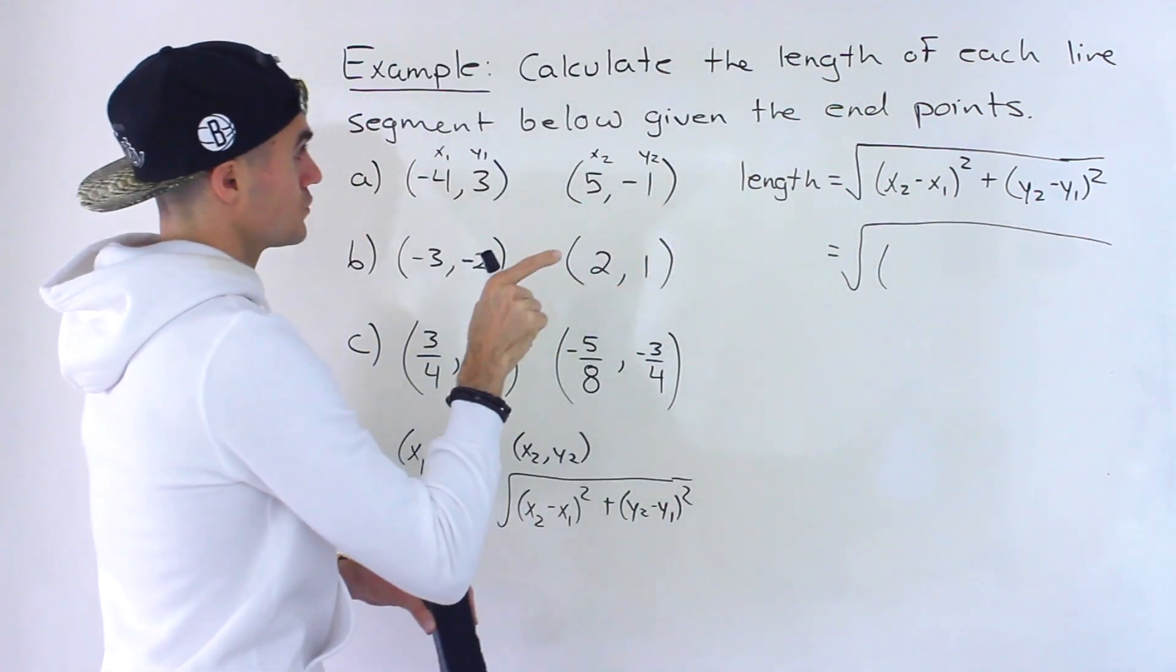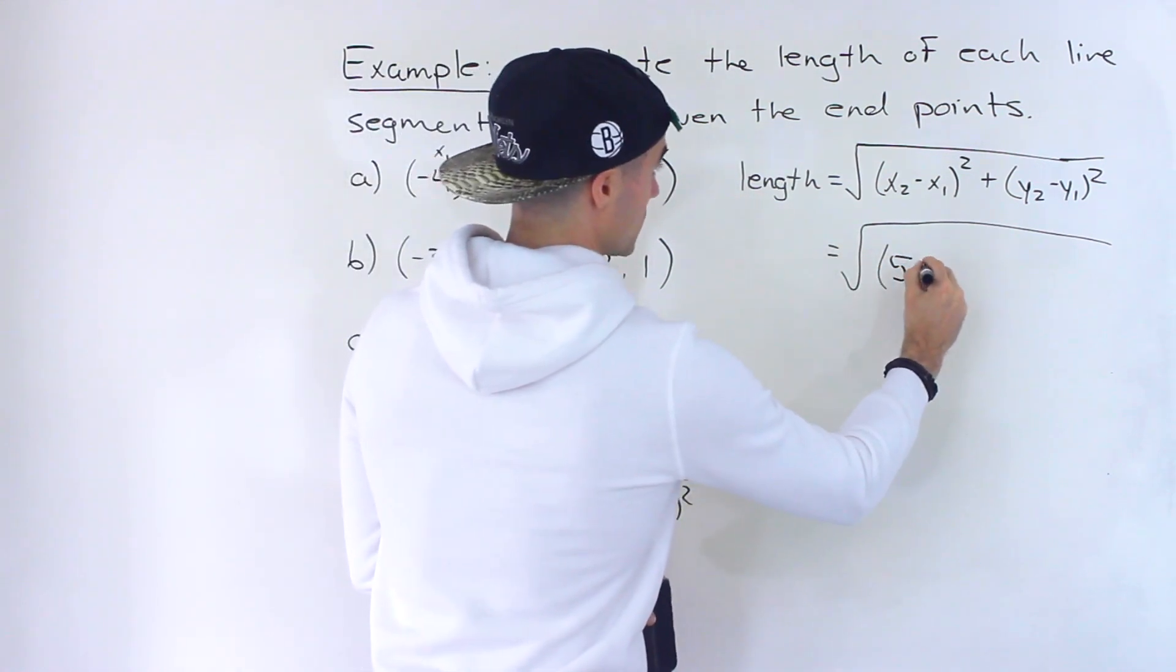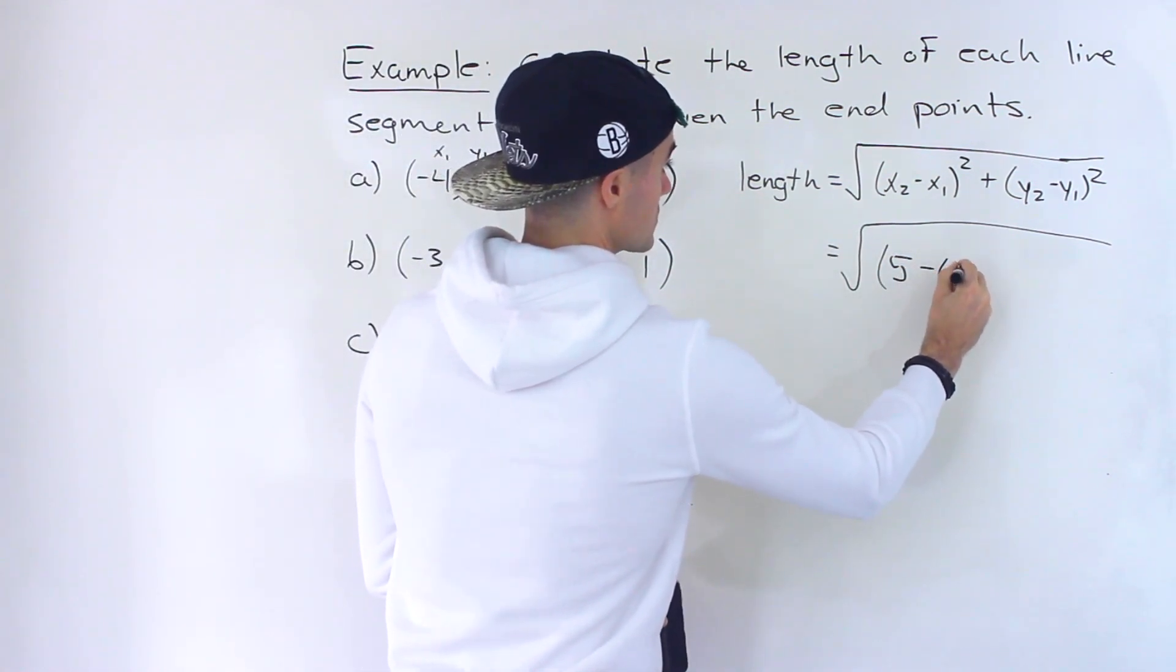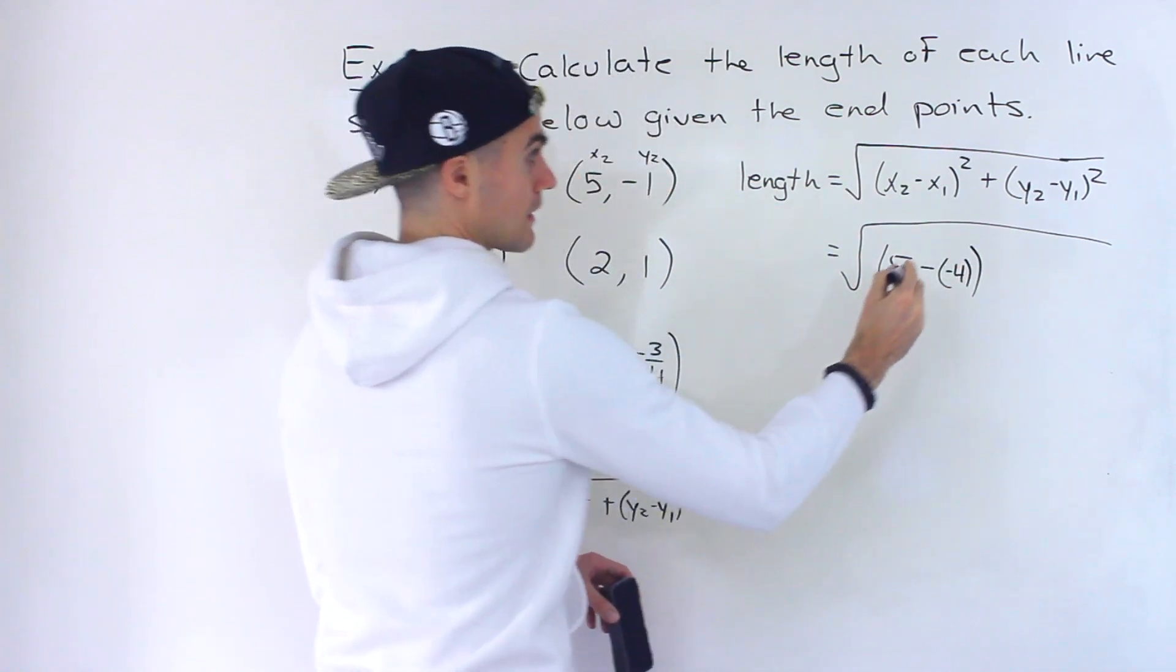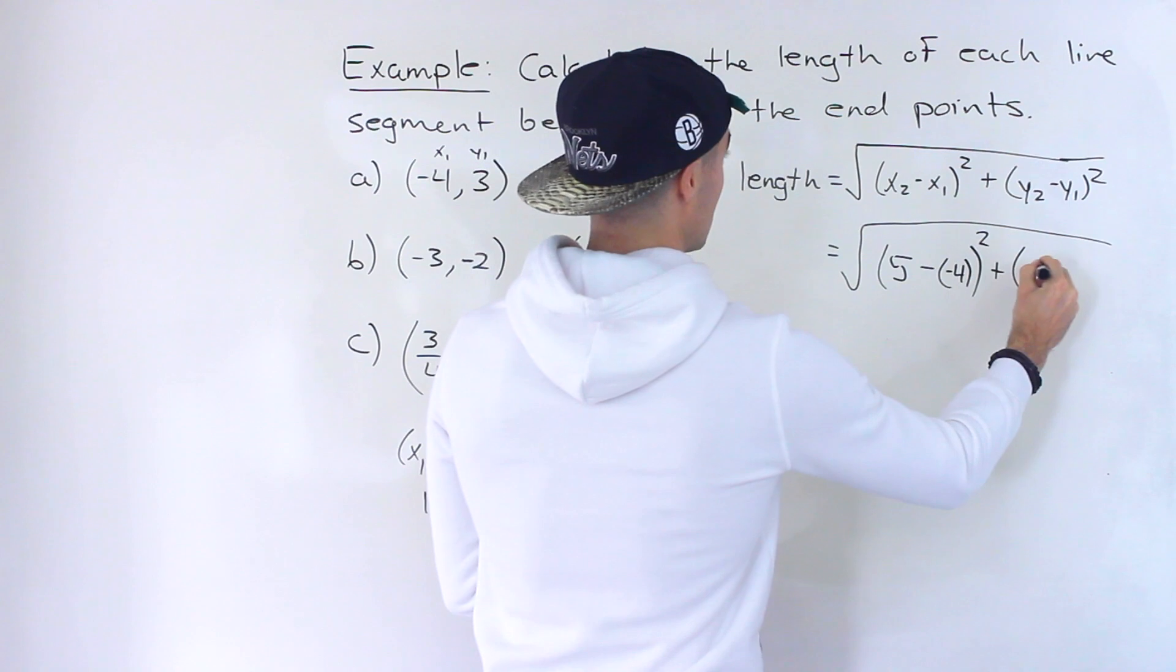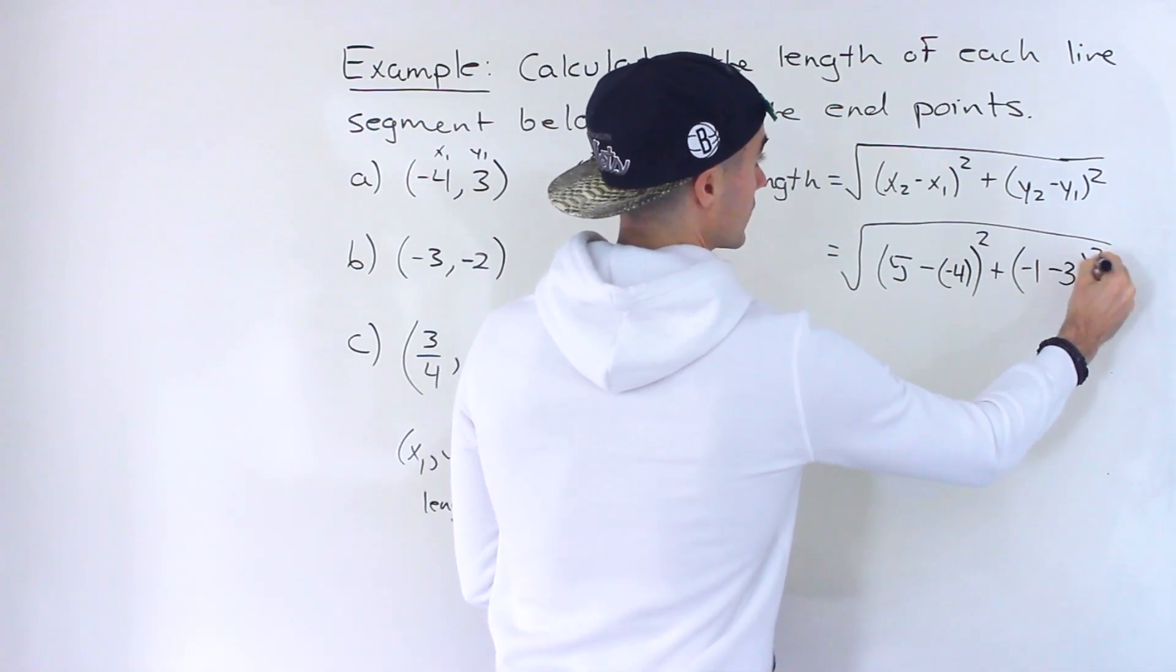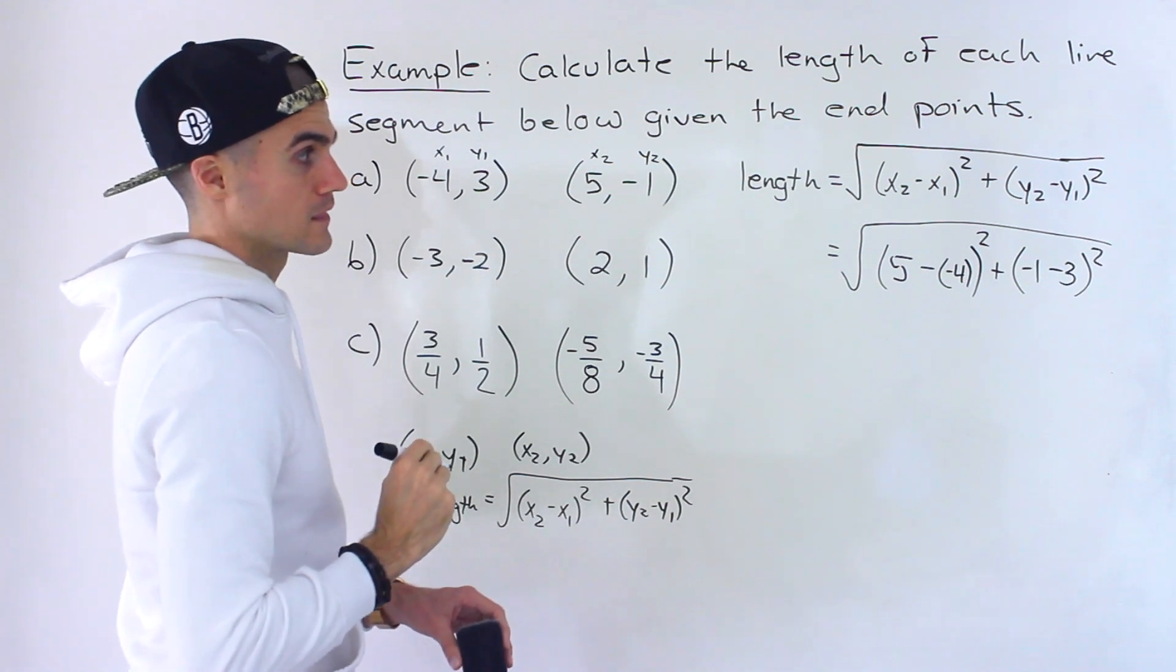So we got x2, which is 5, minus x1. So be careful here as you're subtracting a negative like that. And then you're going to square that. And then you're going to have y2, which is negative 1, minus y1, which is 3. And then you're going to be squaring that right there.